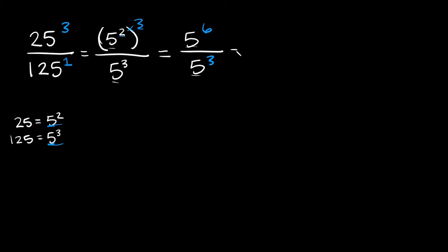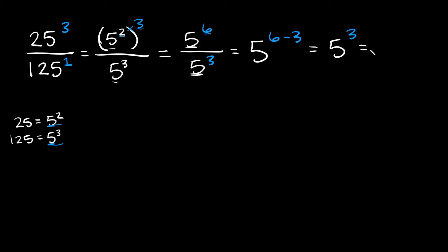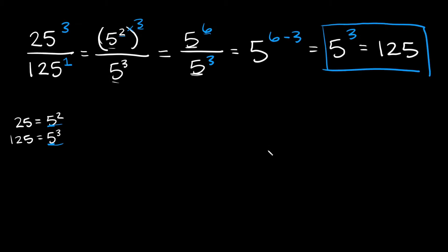That goes over 5 to the 3rd power. We have the same base, so in order to divide — got a 5 there, got a 5 there — just keep the 5 and subtract the exponents. You always write the top one first, so we write 6 minus 3, which equals 3. So here we have 5 cubed, which is equal to 125. Either one of those answers would work.